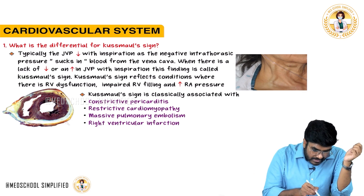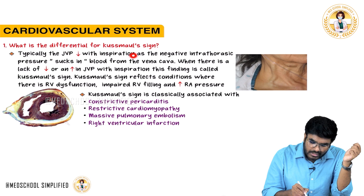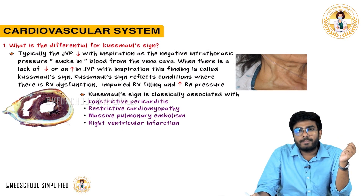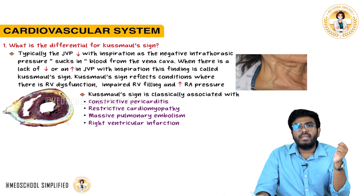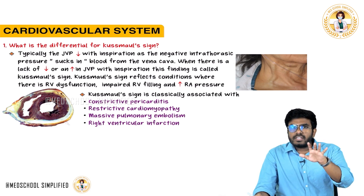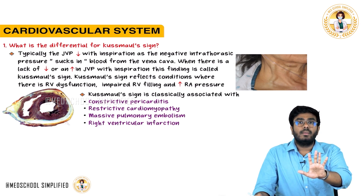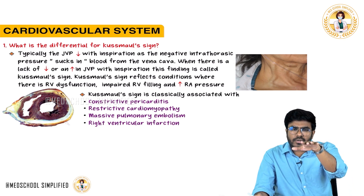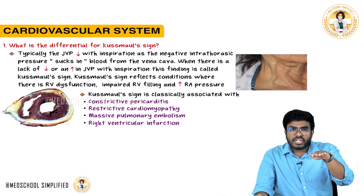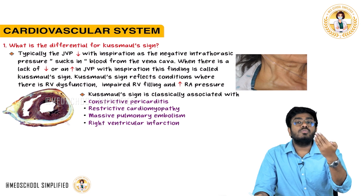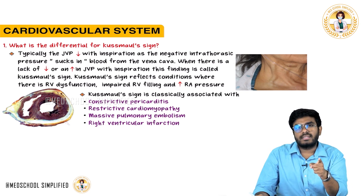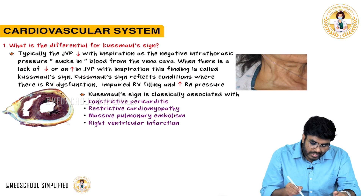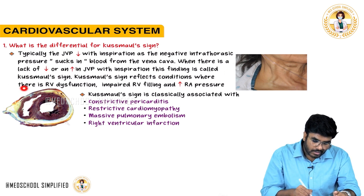Typically, the jugular venous pressures are going to decrease with inspiration as negative intrathoracic pressure sucks in the blood from the vena cava. When there is a lack of decrease — for example, with inspiration the jugular venous pressure is not decreasing but increasing, or if it remains the same — then it is called Kussmaul sign. Kussmaul sign is lack of decrease or an increase in the jugular venous pressure with inspiration.